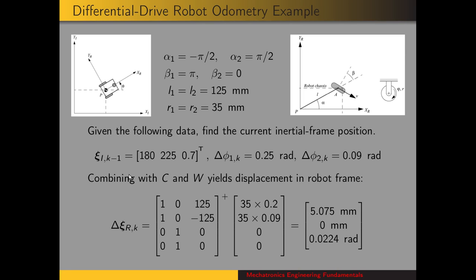We start by getting the Cartesian displacement. We use the matrix C, the wheel radii matrix W, and the displacements. Computing the coefficients for the constraint equations gives us the matrix C: [1, 0, 125; 1, 0, -125; 0, 0, 0]. We take the pseudo-inverse of that matrix and multiply it by W times delta phi — radius times displacement for wheel one, radius times displacement for wheel two, and then zeros for the no-sliding equations. The result is 5.075 millimeters in the robot X direction, zero in the robot Y direction (consistent with the no-sliding constraint), and a rotation change of 0.0224 radians. We then need to transform that into the inertial frame and add it to the previous inertial frame position to get the current position.